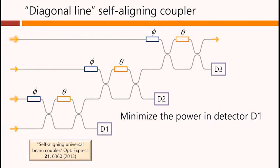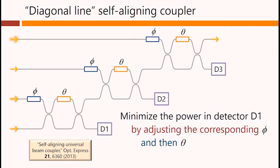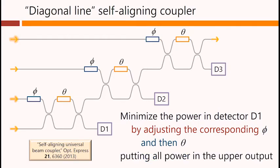So we start by minimizing the power in detector D1, this one here, by adjusting the corresponding phi, and then the corresponding theta. Putting all the power now in the upper output of this Mach-Zehnder. And that changes the power in the output at the far right at the top.